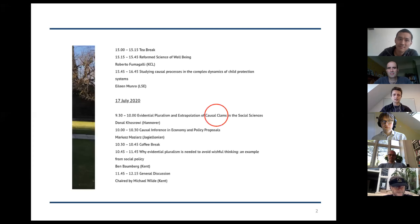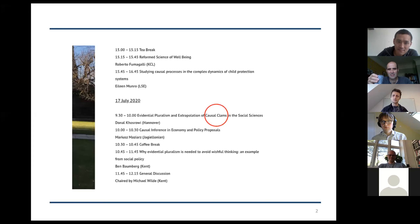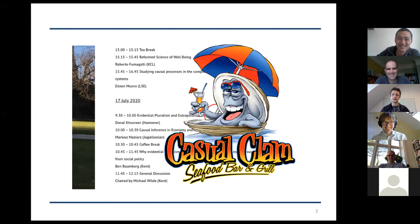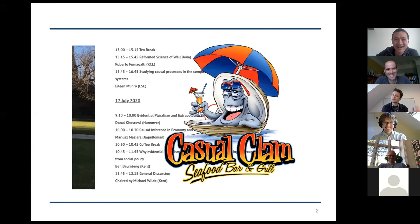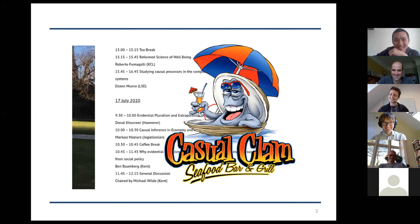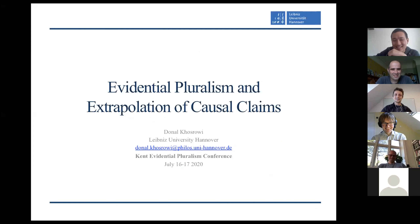Before I start, I just want to say sorry. I think I smuggled a typo into the program. There it says 'causal clams.' Of course, this should have said 'casual clams.' So it's really all about whether it's tasty in one place or also tasty in another. I can see you're chuckling behind your screens. All right, let's get started. So: evidential pluralism and extrapolation of causal claims, of course.